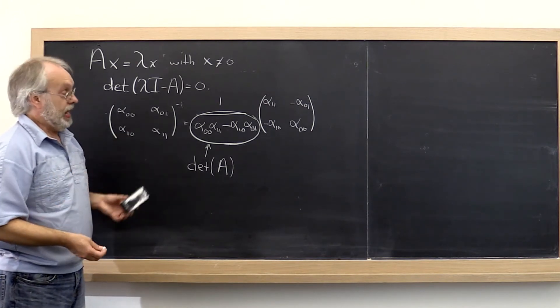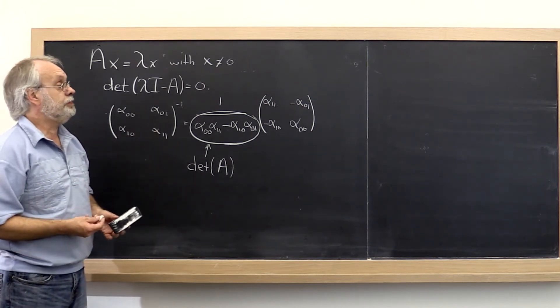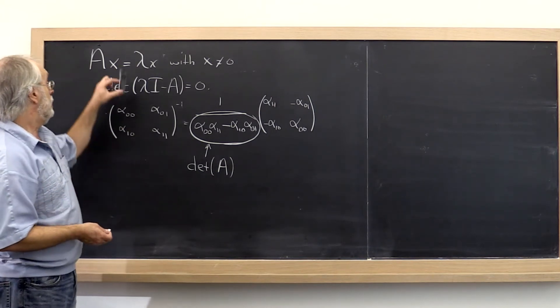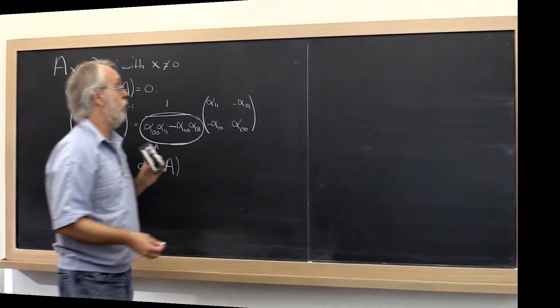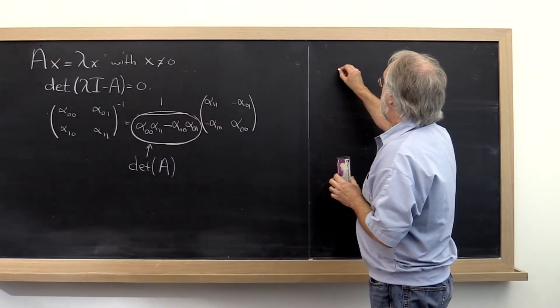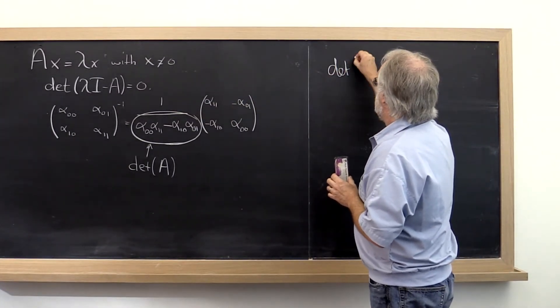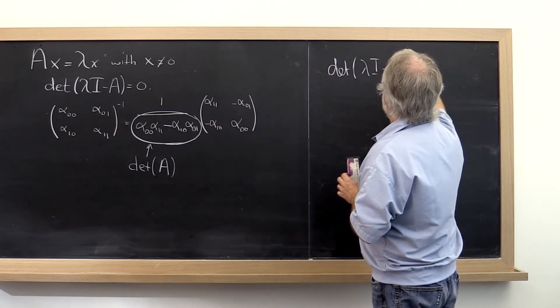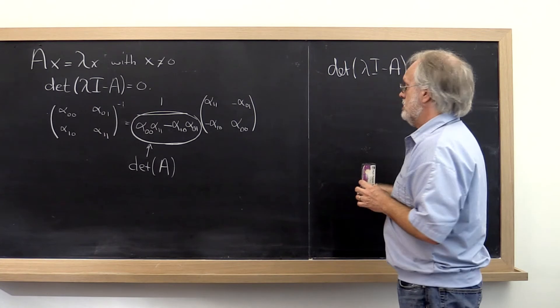Now how can we use this to find the eigenvalues of a 2 by 2 matrix? Well, we know that we want to look at the determinant of lambda I minus A. And that determinant...